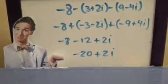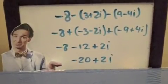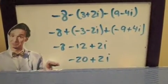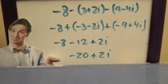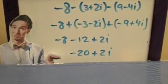Hey Bill, it's Samantha again. I need help with another problem. Okay, what is it? Negative 8 minus 3 plus 2i minus 9 minus 4i. To solve this problem, all you need to do is distribute the negative signs. Once you do this, you'll end up with negative 8 plus, in parentheses, negative 3 minus 2i, plus, in parentheses, negative 9 plus 4i. Once you combine like terms, you end up with negative 20 plus 2i. Thanks for watching!